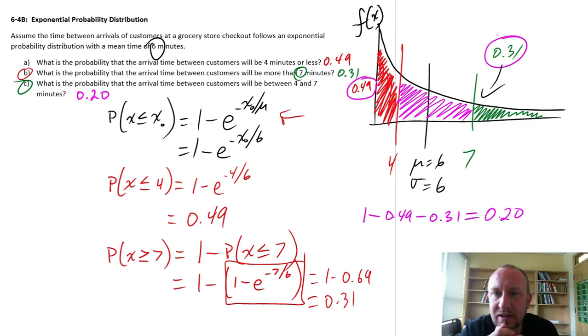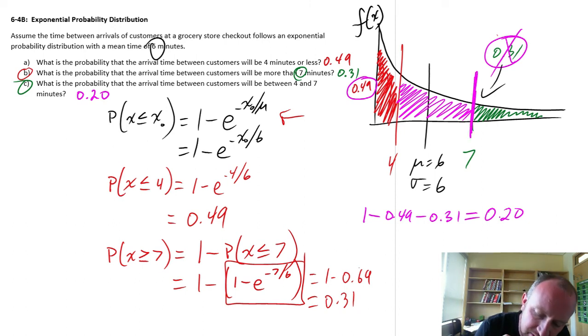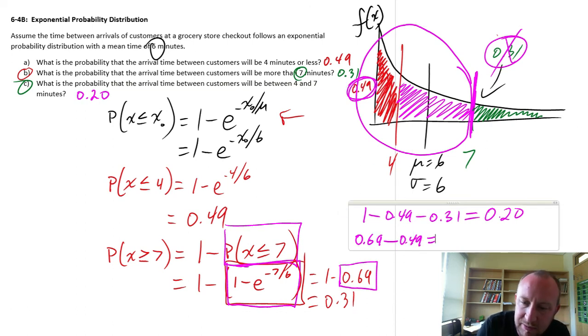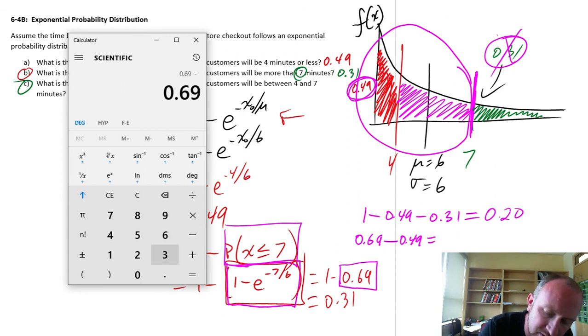Now the other way that we could have calculated that: when we had first calculated that probability for 7, remember that was the probability that it is less than 7, the region under the curve. We had calculated that to be 0.69. So if we had calculated 0.69 minus that red space, 0.49, that should give us exactly the same answer. 0.69 minus 0.49, there you have it, 0.20.